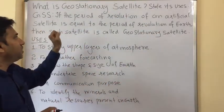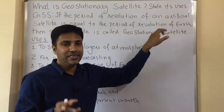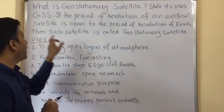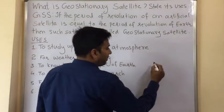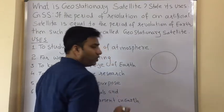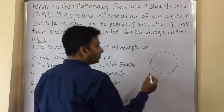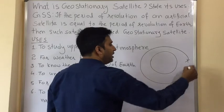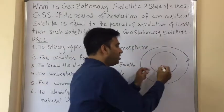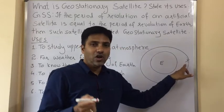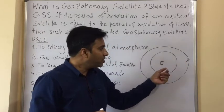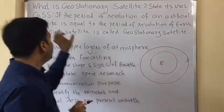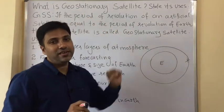If the period of revolution of a satellite is equal to the period of rotation of earth, then that satellite is called a geostationary satellite. Consider earth — we know that earth rotates in 24 hours. If a satellite also revolves around the earth in 24 hours, then since the time period of revolution of the satellite equals the time period of rotation of earth, such a satellite is called a geostationary satellite.